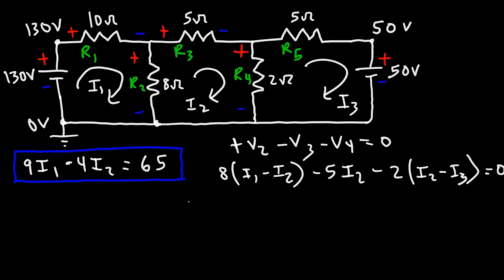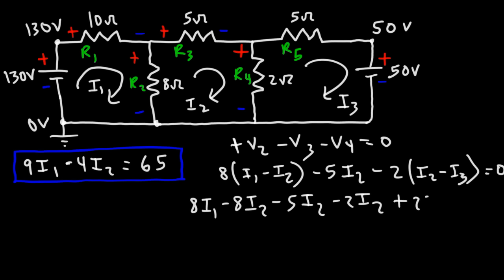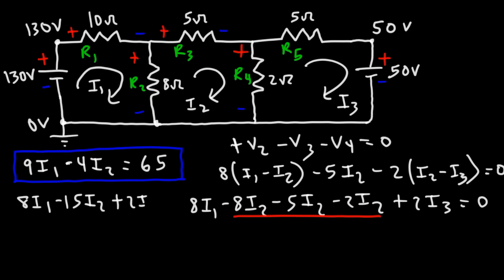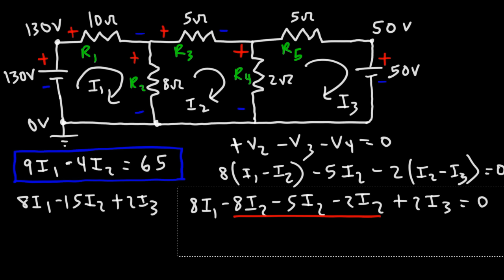Simplifying: 8I1 minus 8I2 minus 5I2, and distributing the negative 2 gives negative 2I2 plus 2I3, all equal to zero. Combining: negative 8 minus 5 is negative 13, minus 2 is negative 15. So the equation is: 8I1 minus 15I2 plus 2I3 equals 0.